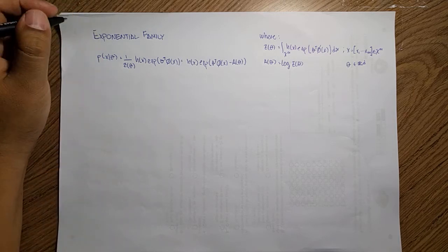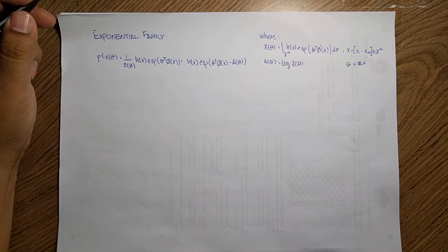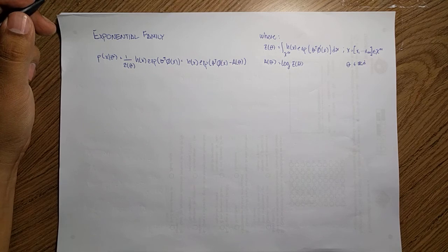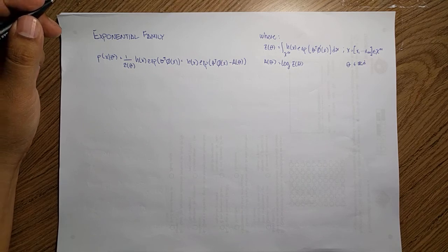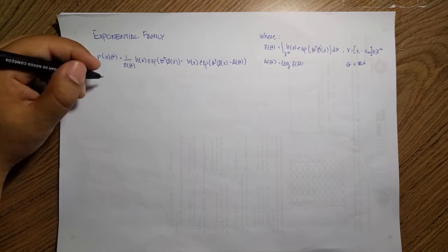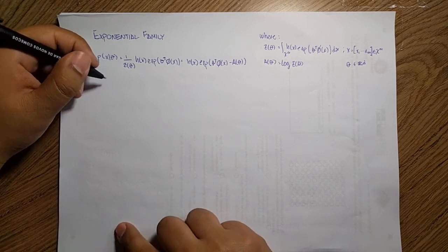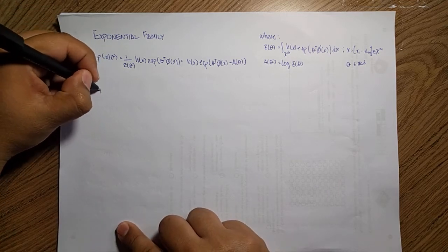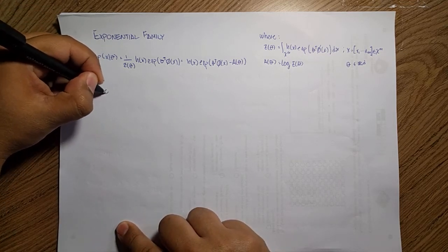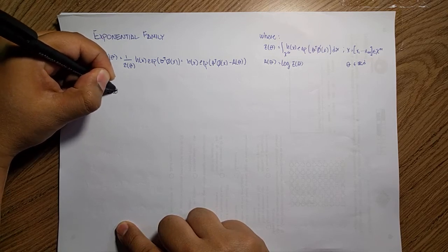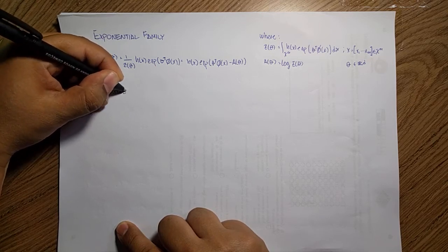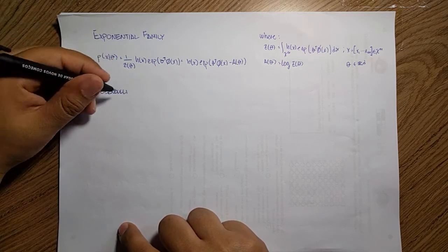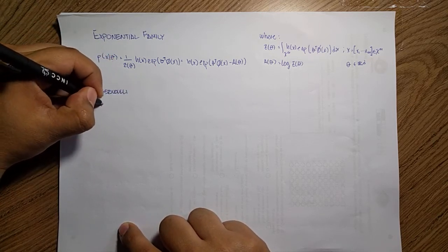To see how we can use this, in the book 'Machine Learning: A Probabilistic Approach,' chapter six, there are several examples. I'm going to quickly go through one here and talk about the Bernoulli distribution.